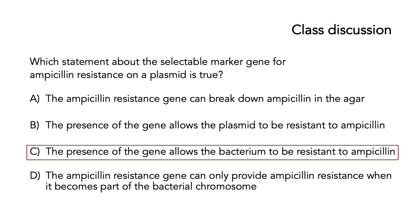The answer is C — the presence of the gene allows the bacterium to be resistant to ampicillin. A is not true because the ampicillin resistance gene is not in the agar; it's in the bacterium. B is not true because it's not the plasmid that becomes resistant — it is the bacterium. The plasmid does contain the resistance gene, but that gene allows the bacterium to become resistant. D is also not true; the resistance gene always stays in the plasmid and never integrates with the bacterial chromosome — that's not a necessary condition.